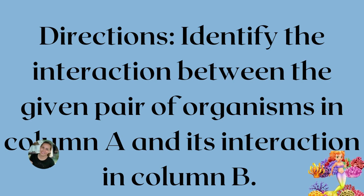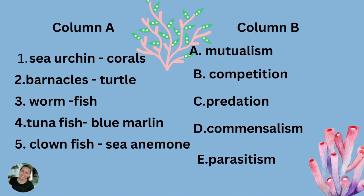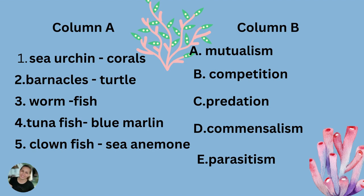Directions: identify the interaction between the given pair of organisms in Column A and match its interaction in Column B. Column A: number one, sardines and corals; number two, barnacles and turtle; number three, worm and fish; number four, tuna fish and smaller fish; and number five, clownfish and sea anemone.